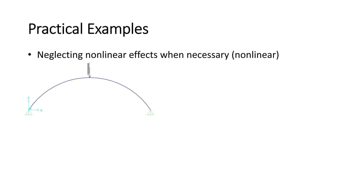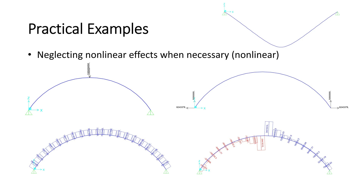However, when conducting a nonlinear analysis, the results vary largely. The beam snaps through and is now below both supports. This deformed shape causes the horizontal reaction forces to act in tension rather than compression as in the linear analysis. All axial forces inside the beam become tensile instead of compressive, and the distribution of shear varies largely from the linear analysis results. This example shows that when exposed to large deformations, a nonlinear analysis is a must in order to obtain results as close to reality as possible.